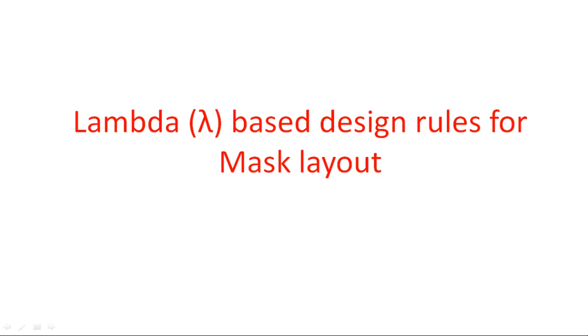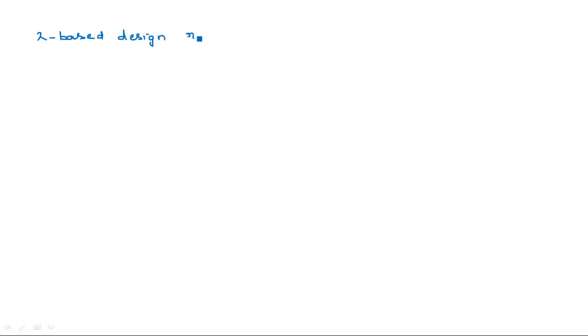In this video, I am going to discuss the rules and regulations regarding mask layout when we design layout diagrams for CMOS circuit diagrams. There are some rules we should follow, like what should be the minimum width and minimum length of a particular wire or layer. Such rules are identified as lambda-based design rules, where all values are mentioned in terms of lambda — one lambda, two lambda, three lambda, and so on.